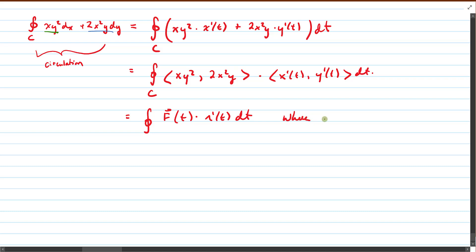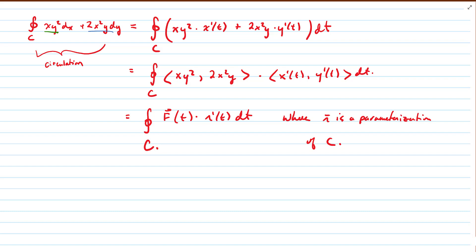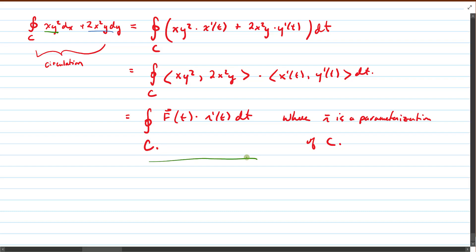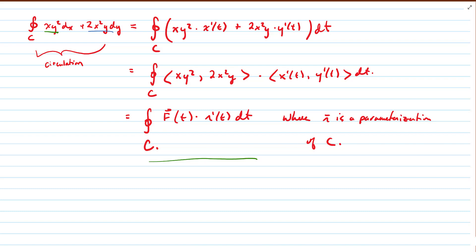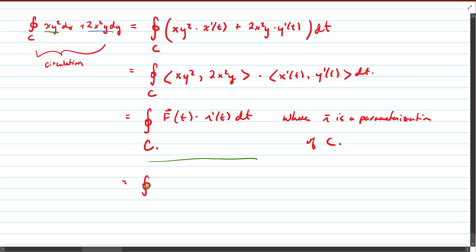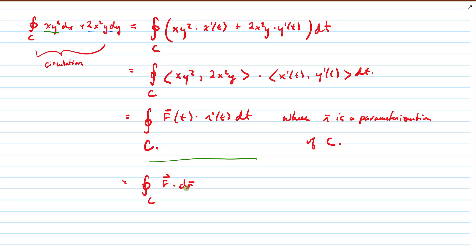where r is a parameterization of the curve c, which by the way I should have labeled here. So now this does indeed look like how we usually give the circulation form of a line integral. If you'd like, you could take that a step further and write that as F dotted with dr, and now it surely looks like the traditional circulation form of a line integral. If you have any questions on that, let me know.